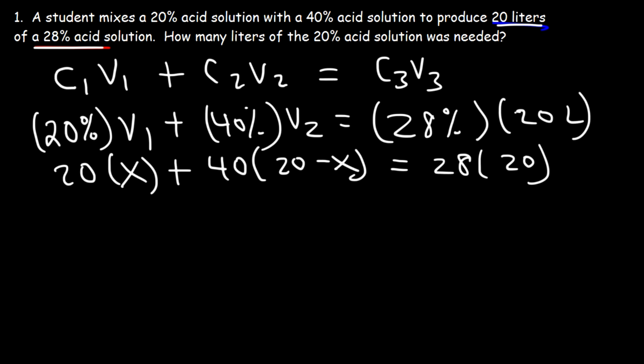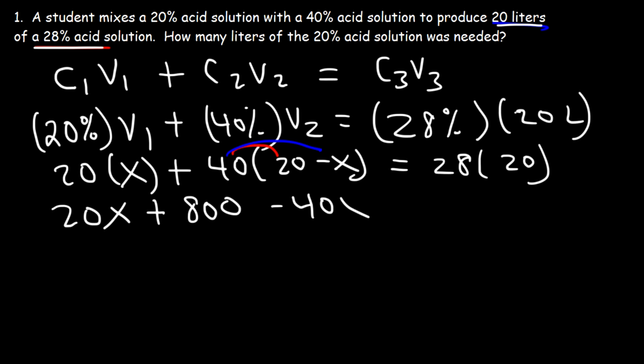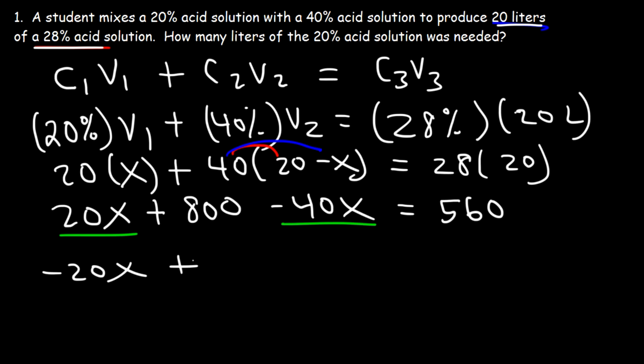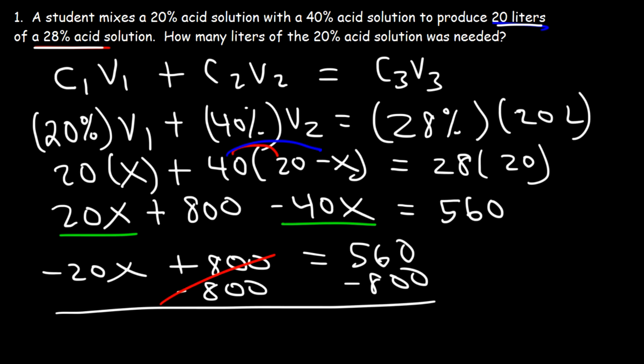So let's do some algebra. This is going to be 20x plus — let's distribute the 40. 40 times 20 is 800, and 40 times negative x is negative 40x. Then we have 28 times 20, which is 560. Now let's combine like terms: 20x minus 40x adds up to negative 20x. Now let's subtract 800 from both sides — those will cancel. Negative 20x is equal to 560 minus 800, which is negative 240.